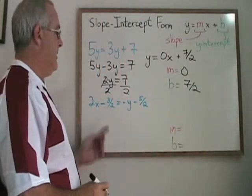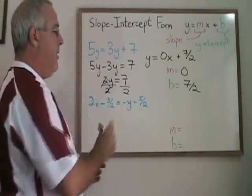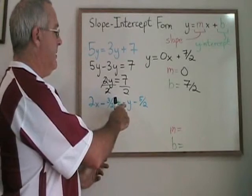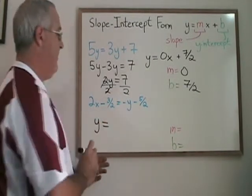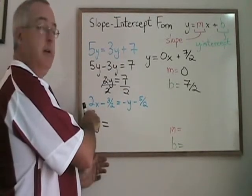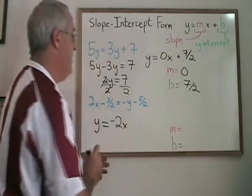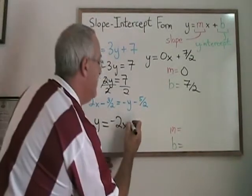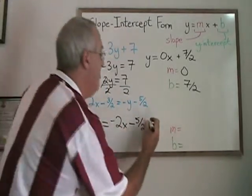In this last example, there's a little bit more algebra to do. I want my y isolated to the left of the equals, so I move the negative y from the right to the left of the equals, and I have positive y. I want my x to the right of the equals. It's 2x over on the left, so it will become negative 2x on the right. The minus 5 halves stays on the right, and the minus 3 halves moves to the right and becomes plus 3 halves.